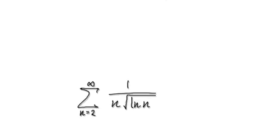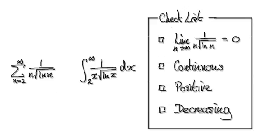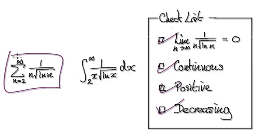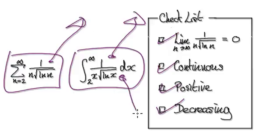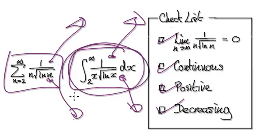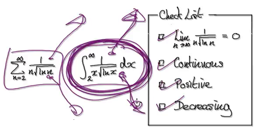Following on from the previous video, we got to this stage where we checked all four conditions, and now we can apply the theorem which says that if this integral diverges then the series will also diverge, and if this integral converges then the series will converge. So it now boils down to determining whether this integral will diverge or converge.